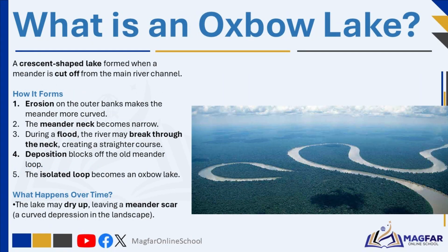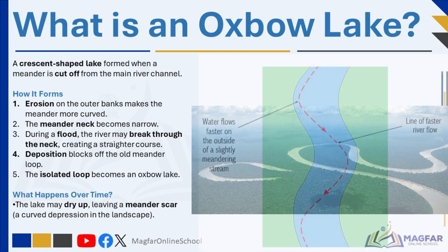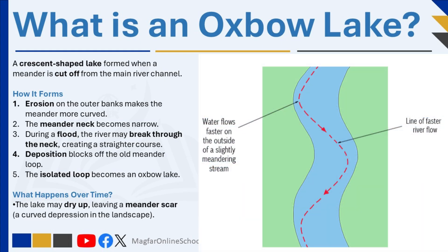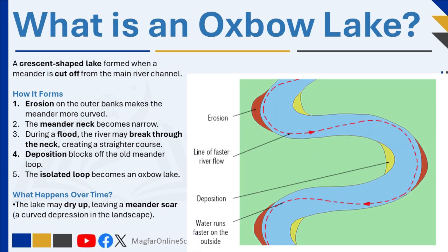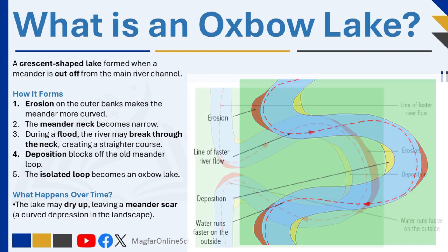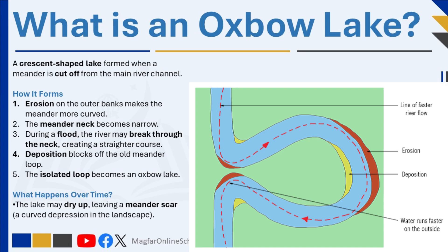An oxbow lake is a crescent-shaped or U-shaped lake that forms when a meander in a river is cut off from the main channel. This process begins as the river flows in large bends — on the outer bank, water flows faster and causes erosion, while on the inner bank, slower water deposits sediment. Over time the bend becomes more curved, and the narrow piece of land between the two closest parts of the meander, called the meander neck, becomes thinner and thinner.